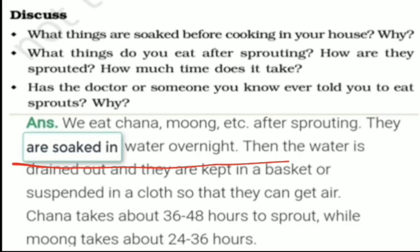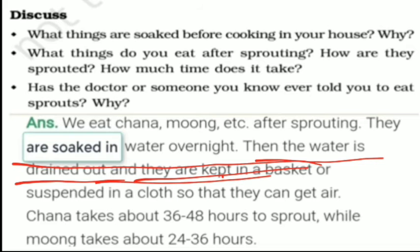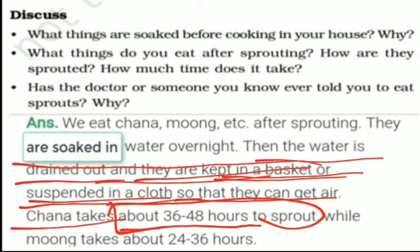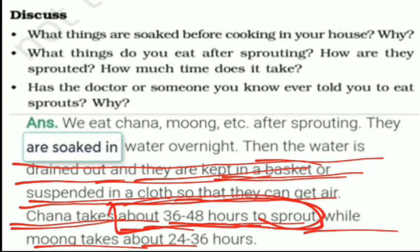The water is drained out, and they are kept in a basket or suspended in a cloth so that they can get air. Chana takes about 36 to 48 hours to sprout, while moong takes about 24 to 36 hours. So moong takes less time than chana to sprout.